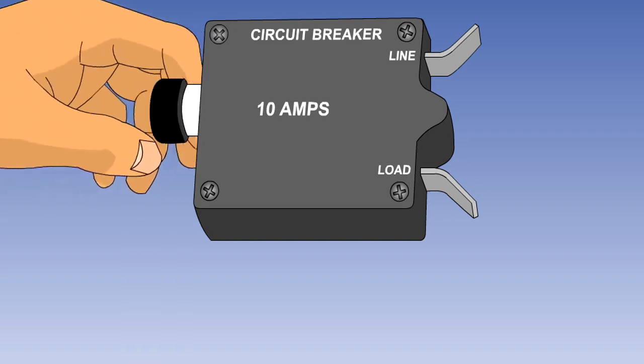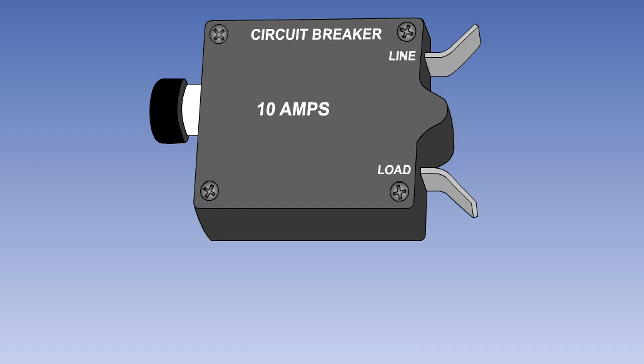A circuit breaker may also be used as a circuit isolation switch by manually tripping and resetting it as required.